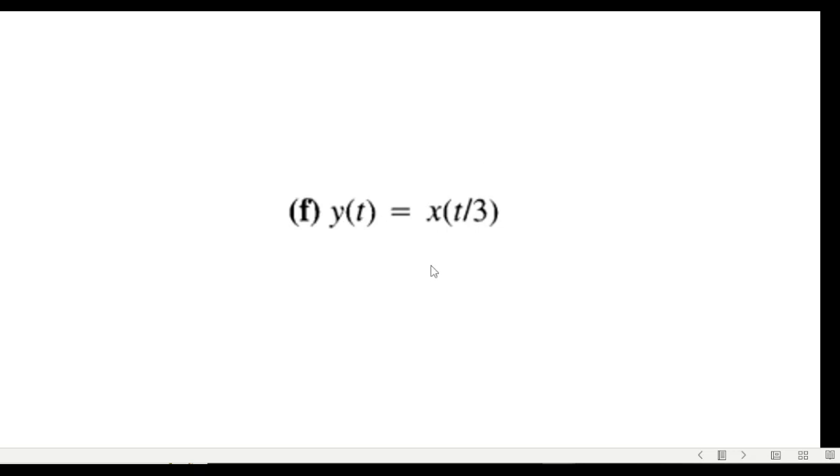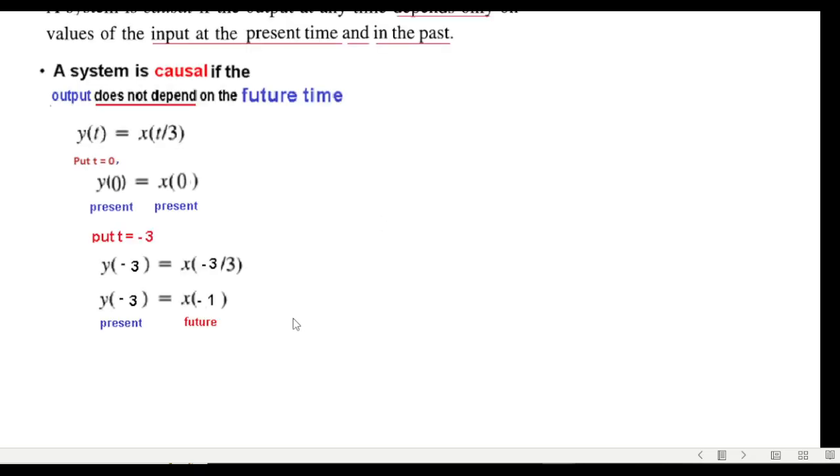Next is y(t) equals x(t/3). Now here also you have to be careful. So putting t equals zero we get present and present, but if we put t equals -3, then y(-3) equals x(-3/3), that is x(-1). Now look at the time diagram.